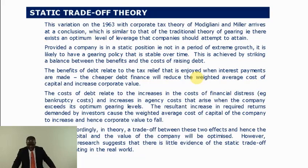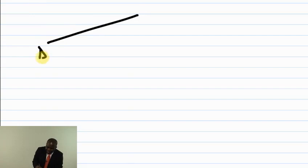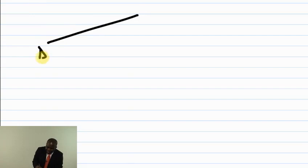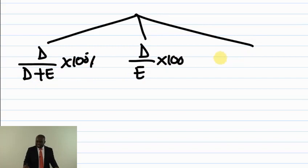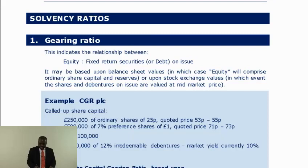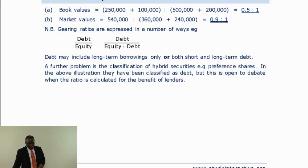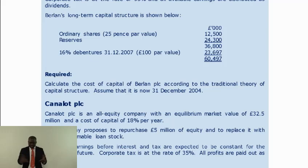The Static Trade-off Theory says: find the trade-off between the benefits of debt (cheaper than equity, provides tax savings) and the costs of debt (financial distress costs, agency costs). M&M 1963 eventually aligned with the traditional theory — capital structure does matter. Gearing ratios can be measured as: debt/(debt + equity) × 100%, or debt/equity × 100%, or interest cover = profit before interest and tax ÷ interest. These are basic calculations at this level.